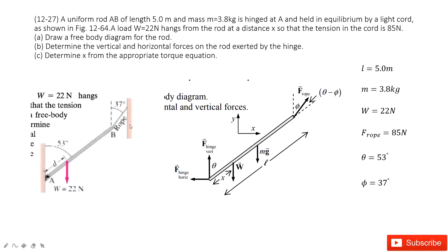The angles theta and phi are also given. First, we need to do the force analysis — let's identify how many forces act on the system. There is gravity Mg for the stick, and also the gravity for the hanging object. There is the tension from the rope, F_rope. And there must also be a force acting on the rod by the hinge, which we call F_hinge.